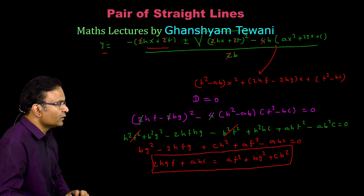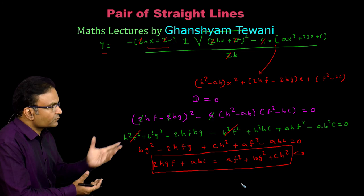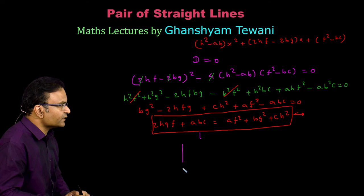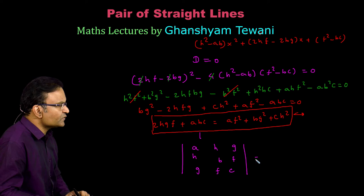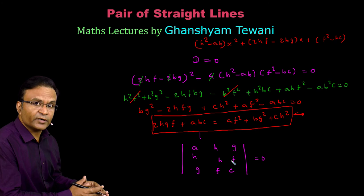This is the condition for a second degree equation representing a pair of straight lines. If you have learned determinants, we can express this condition in determinant form: in the diagonal we put a, b, c and symmetrically h, h, g, g, f, f — this determinant equals 0. Students in class 12 will understand this better as they have done determinants; students in class 11 should wait until after doing determinants, when this will be easier.